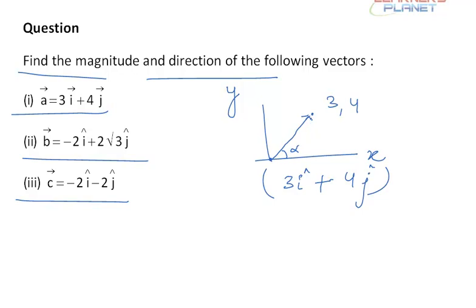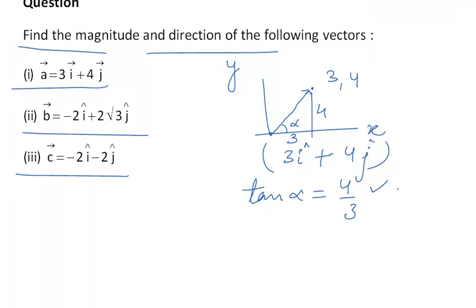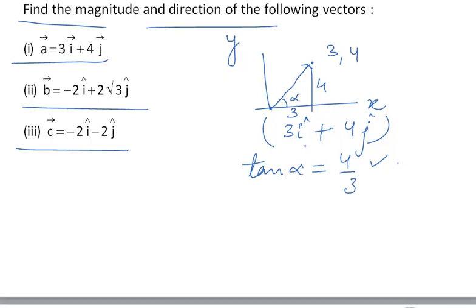And this angle alpha that it makes with the x axis can be given by tan alpha. So this will be equal to, this is 4 and this is 3, so it is 4 by 3. Now based on this we will try to find out the angle as well as the magnitude.